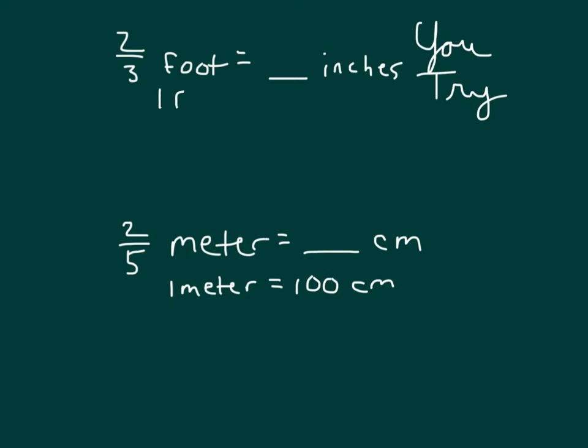We know that one foot does equal 12 inches. We are going from a larger unit to a smaller unit. So we have two-thirds times, and we replace this foot here with the 12 inches, two-thirds times 12. And that was the inches.